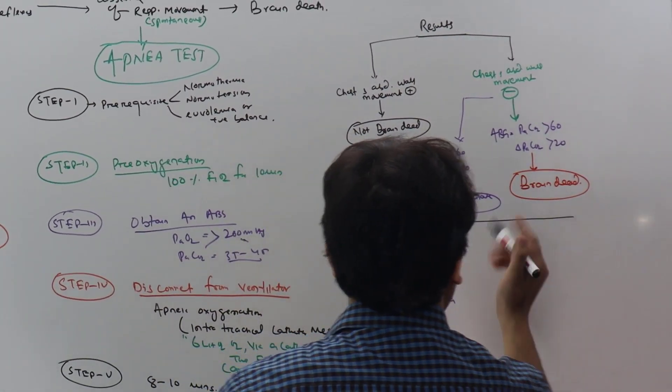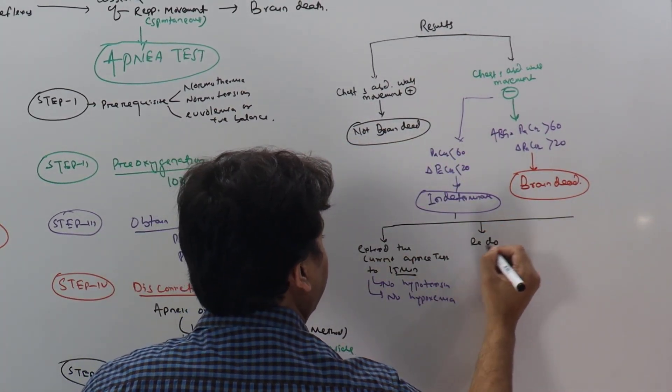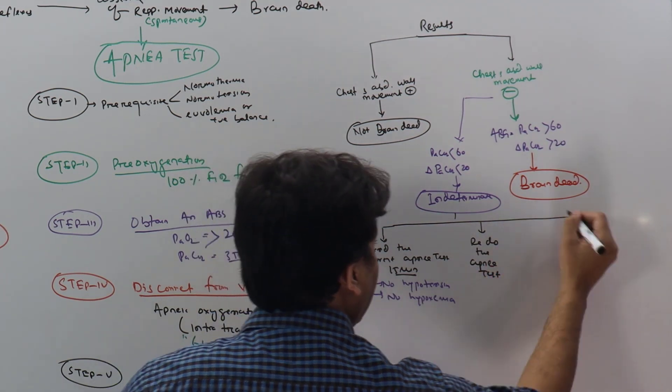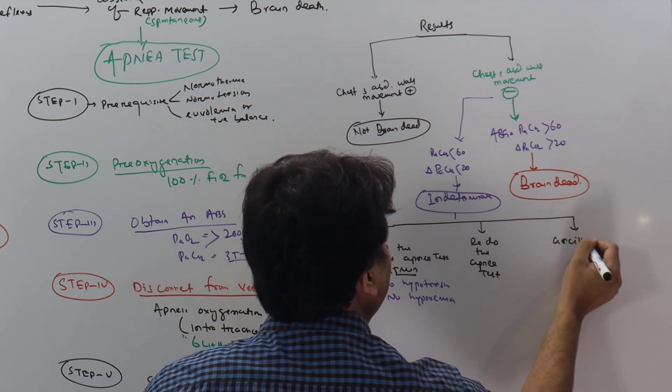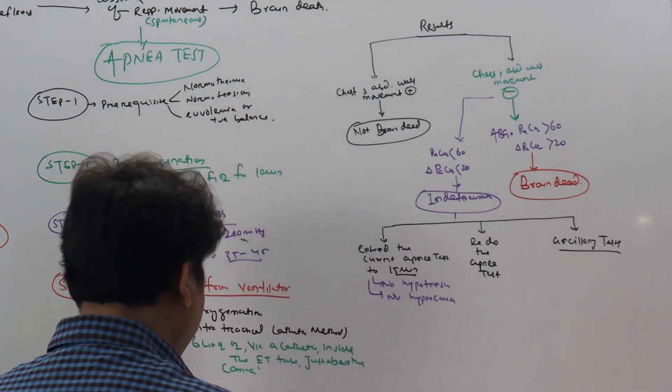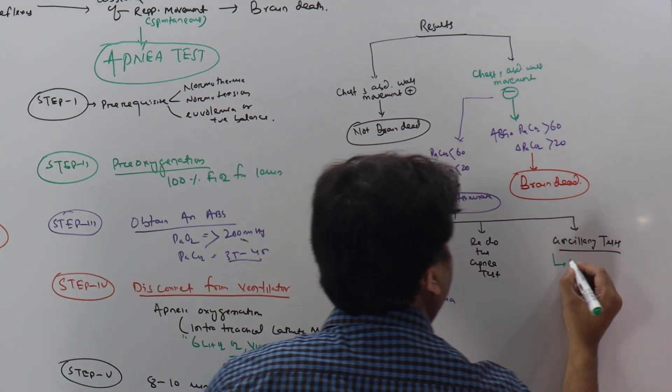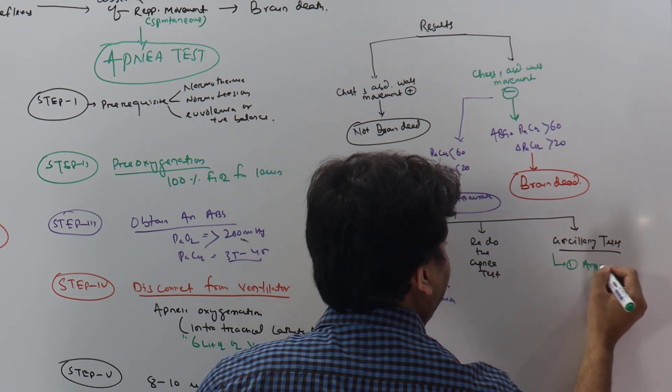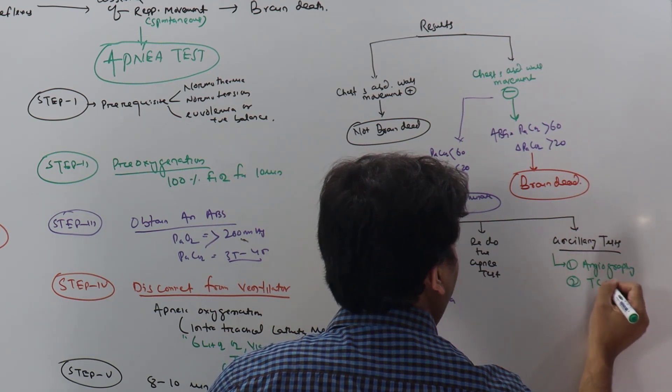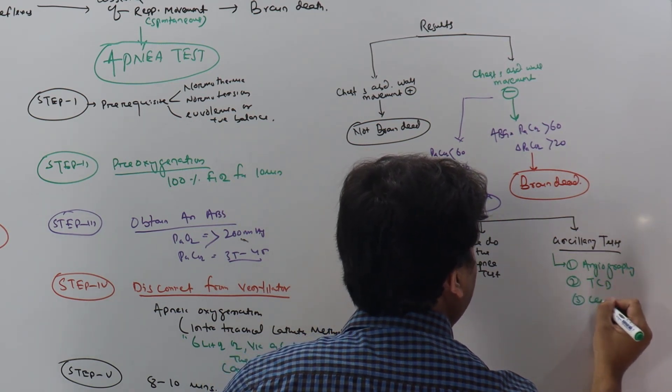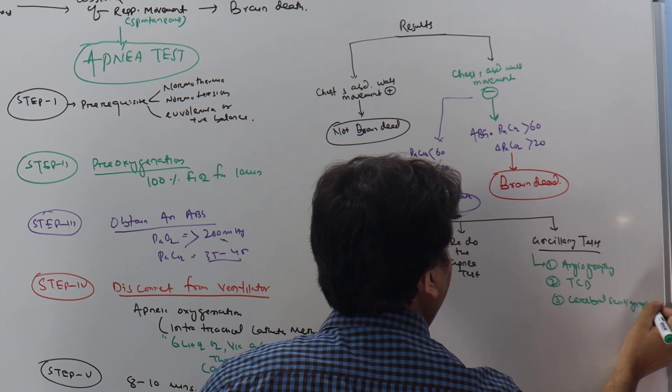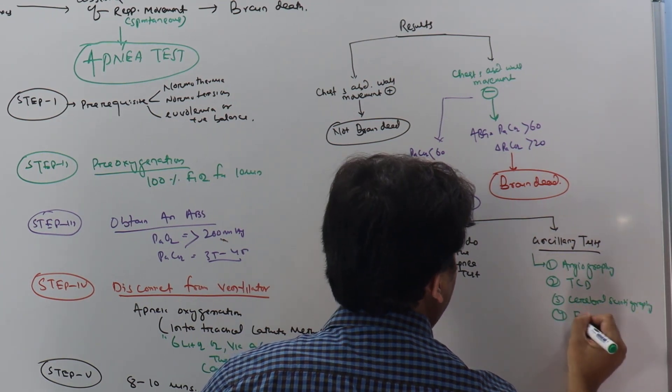Or else what you can do, you can redo the apnea test. Lastly, you can do the ancillary test. For the ancillary test, we have angiography, we have transcranial Doppler, we have cerebral scintigraphy, and we have EEG.